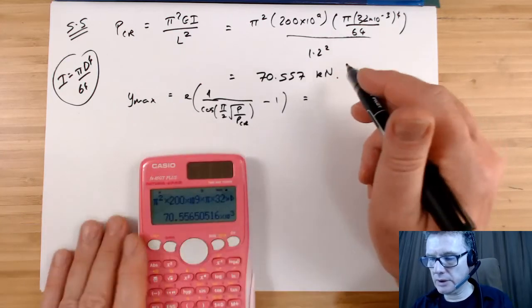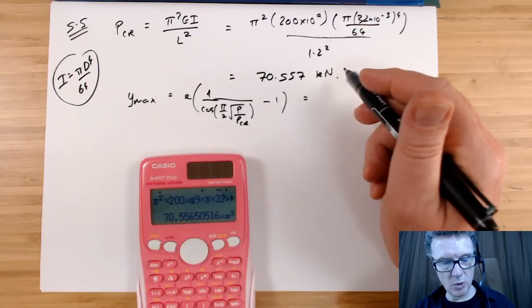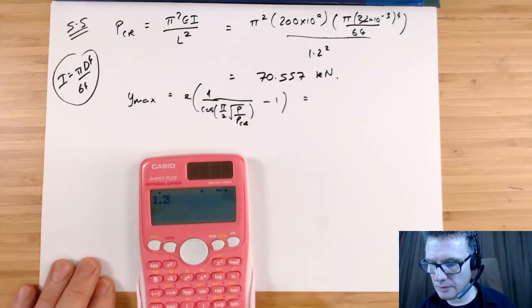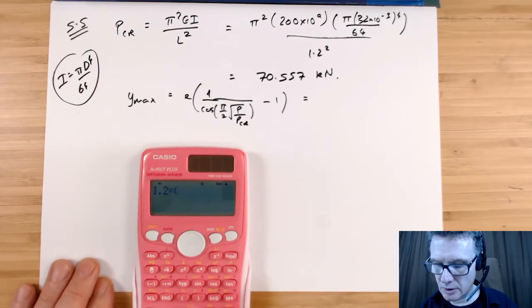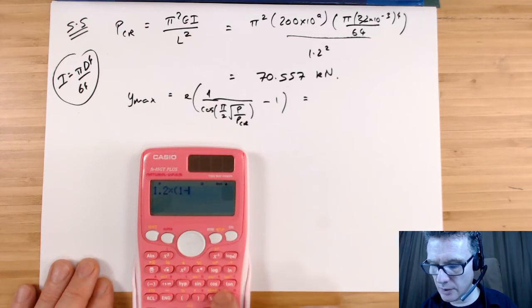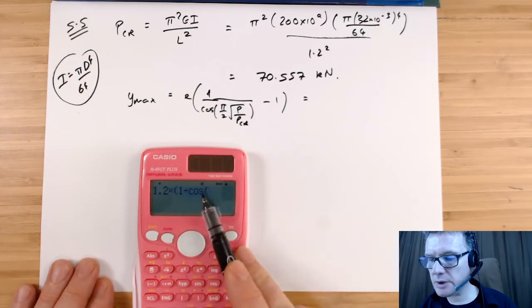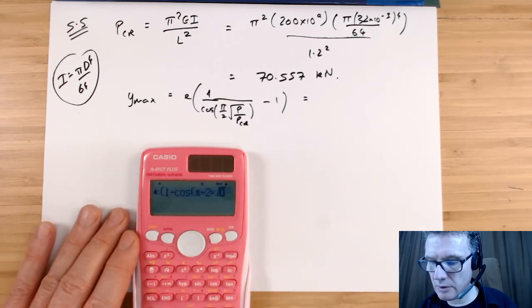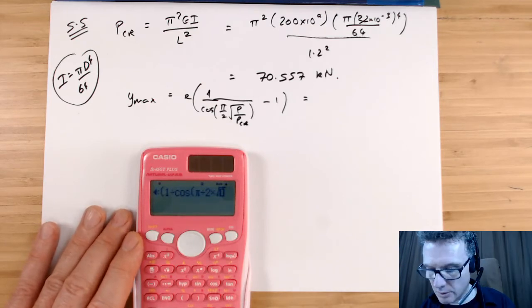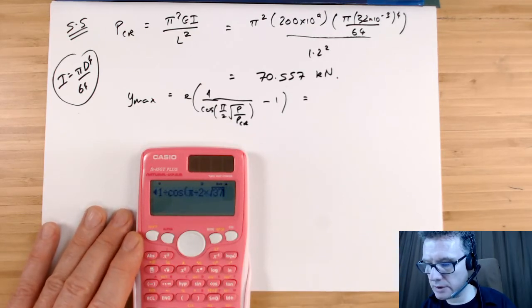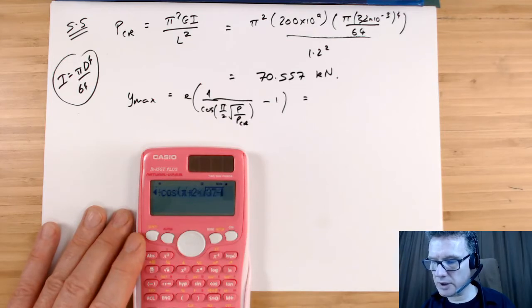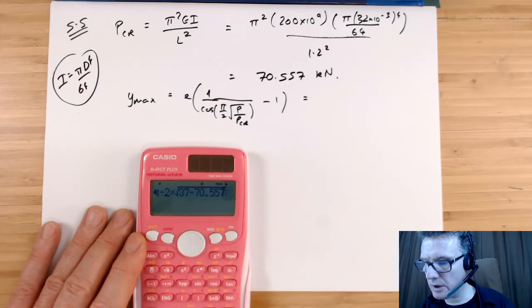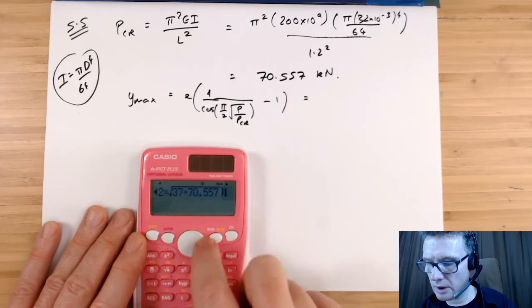So e is 1.2 millimeters. I'll give you the answer in terms of millimeters. So 1.2 times, open my bracket, got 1 divided by cos—notice I'm still in radians—π divided by 2 times the square root of, so the P that we're applying is 37 kilonewtons and the buckling force is 70.557 kilonewtons. Let's close that bracket.